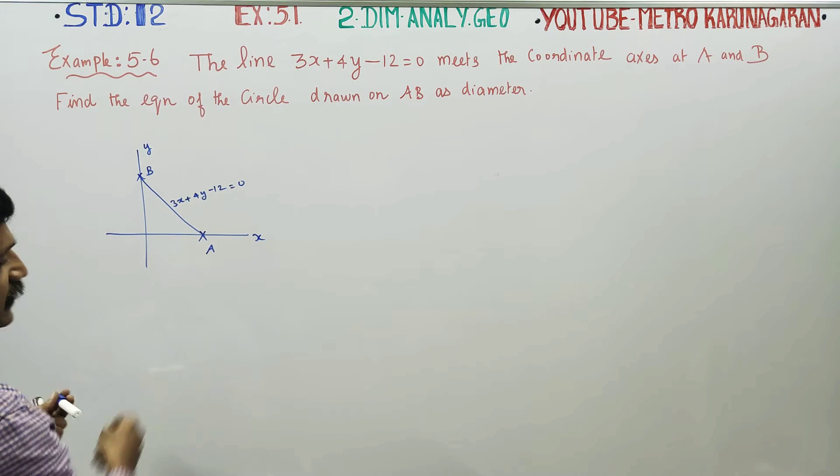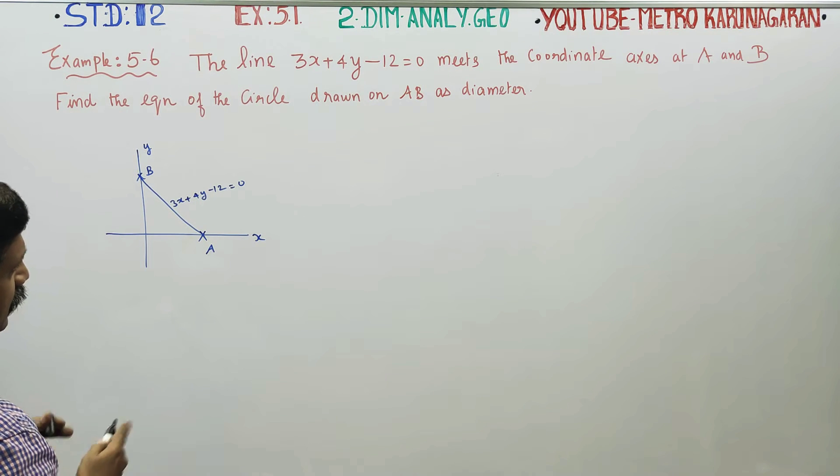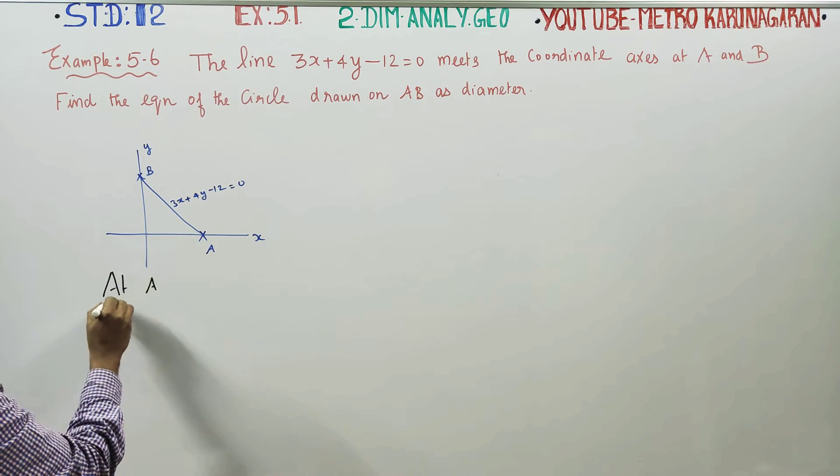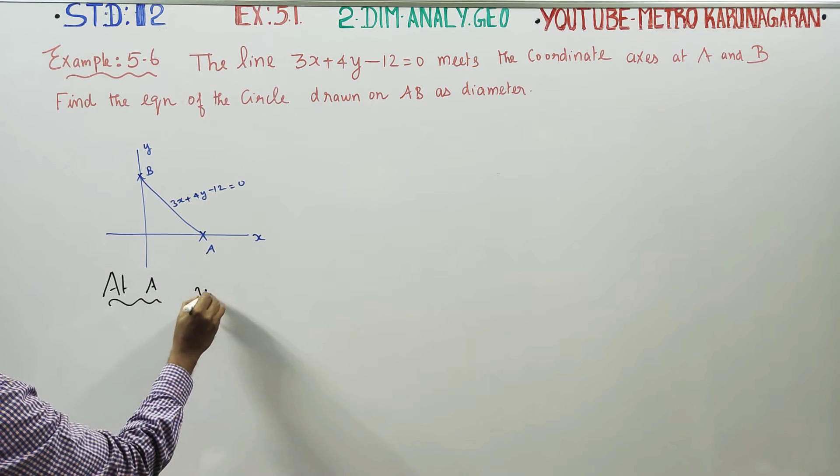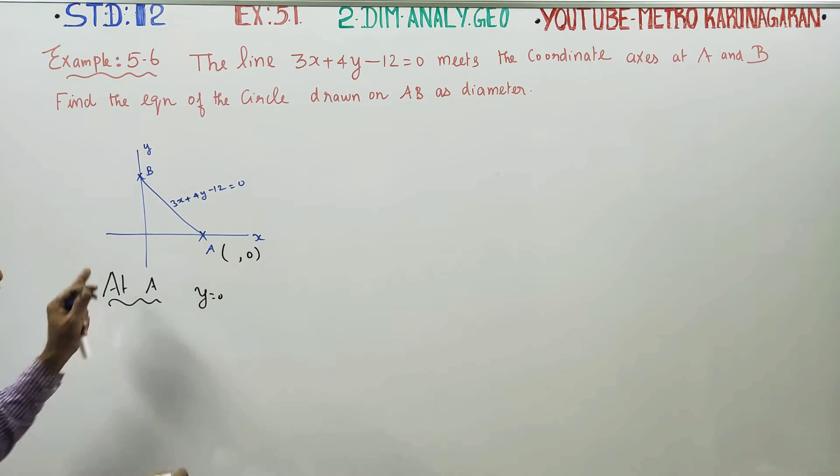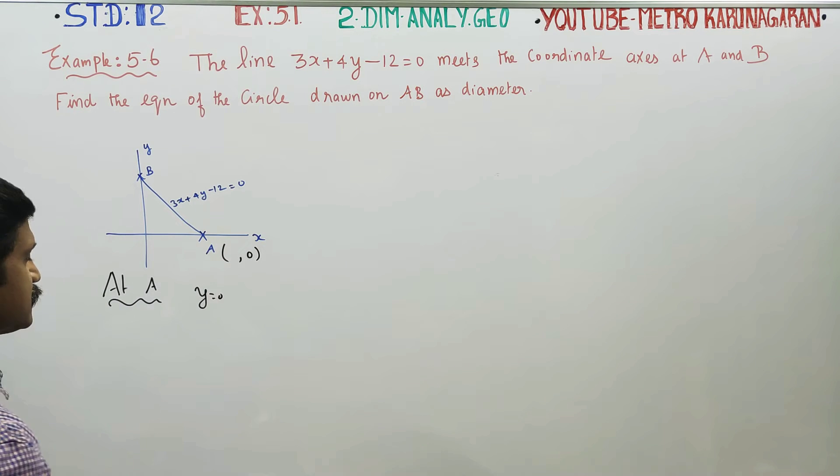First, we will find the values of A and B. At point A on the x-axis, y is equal to 0.